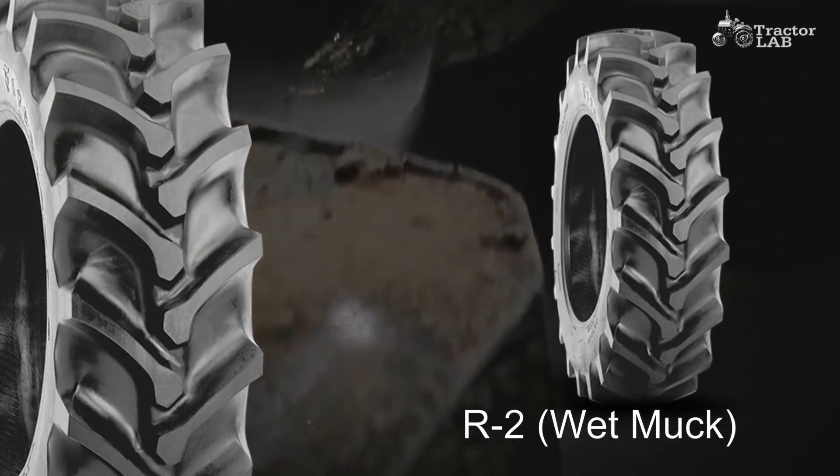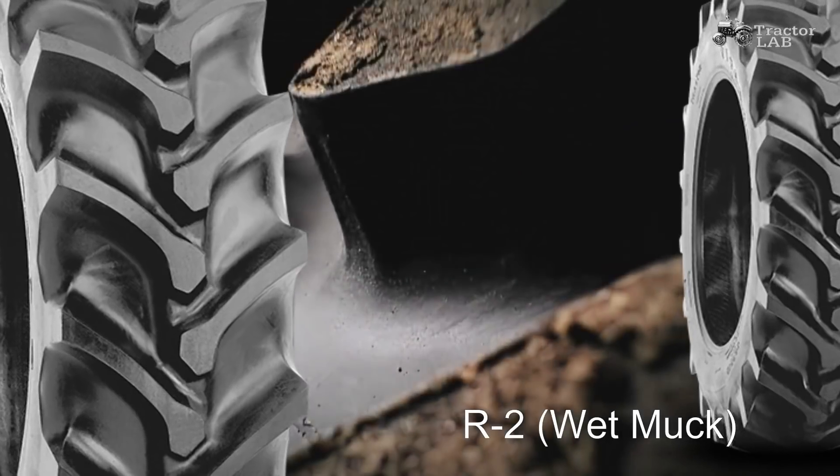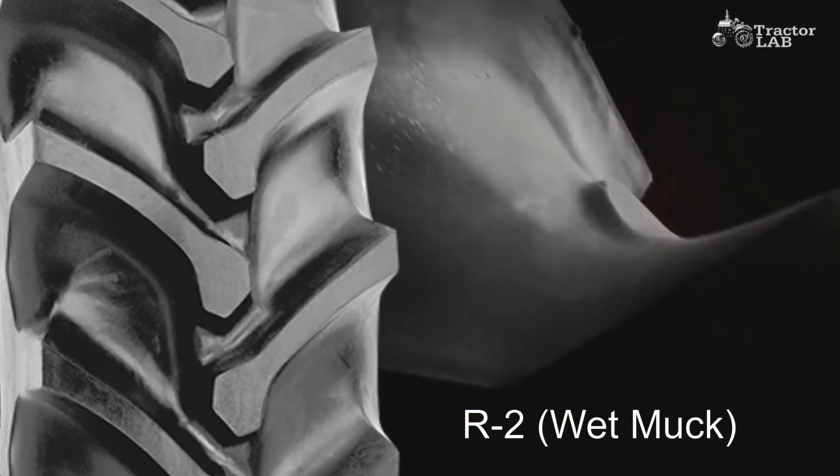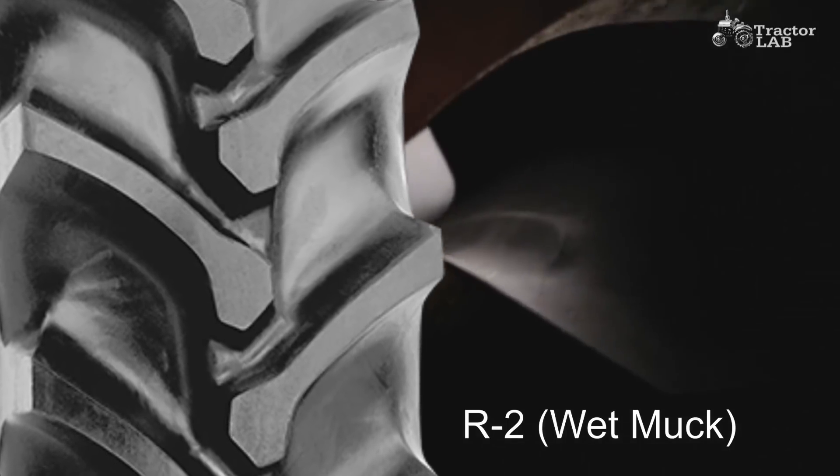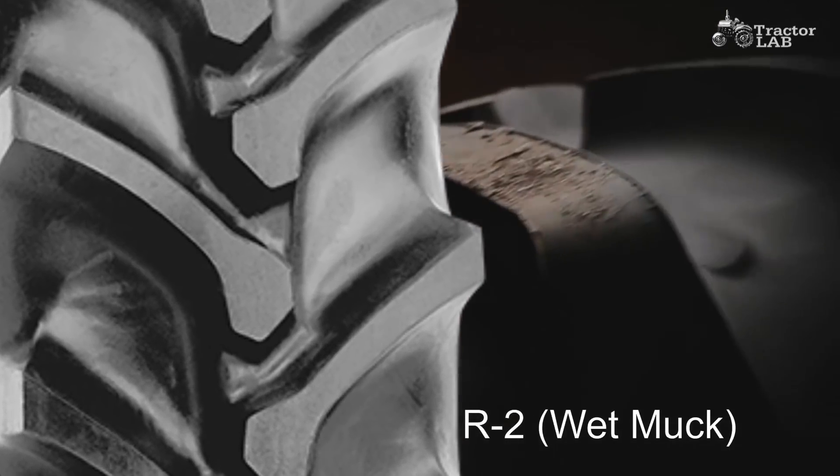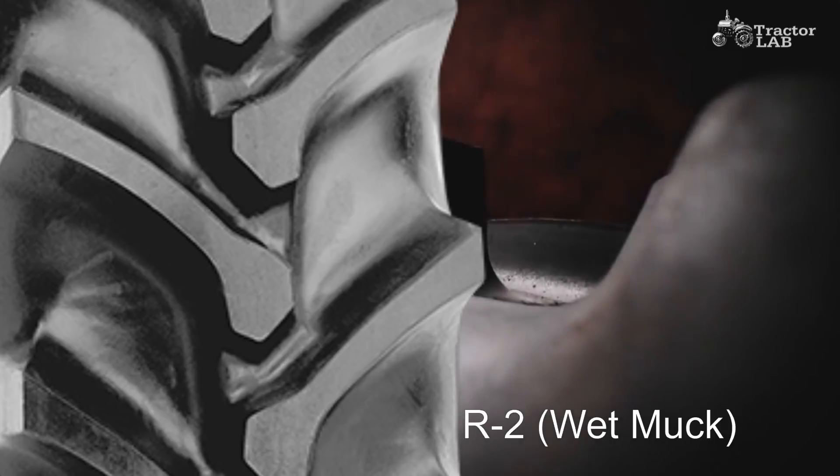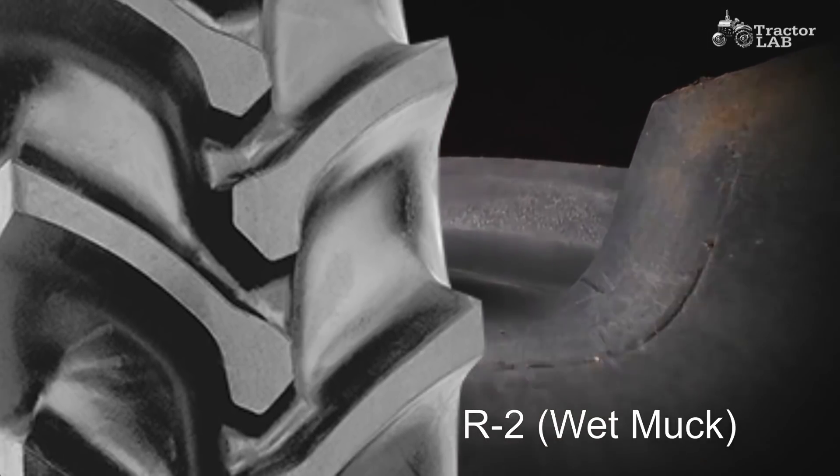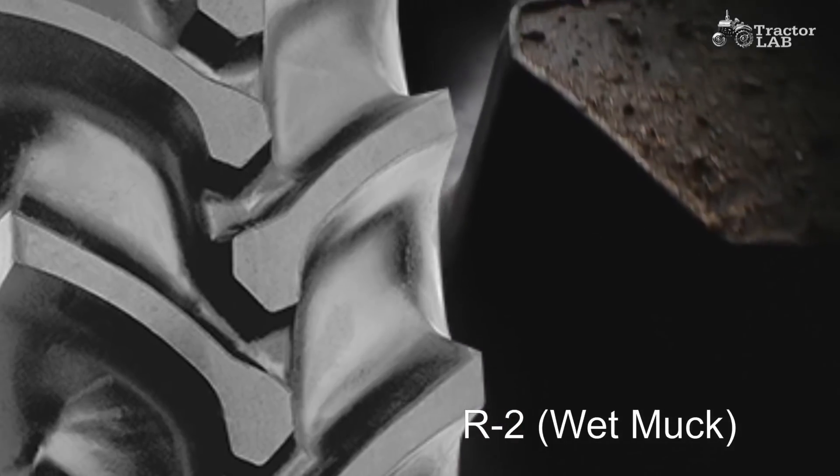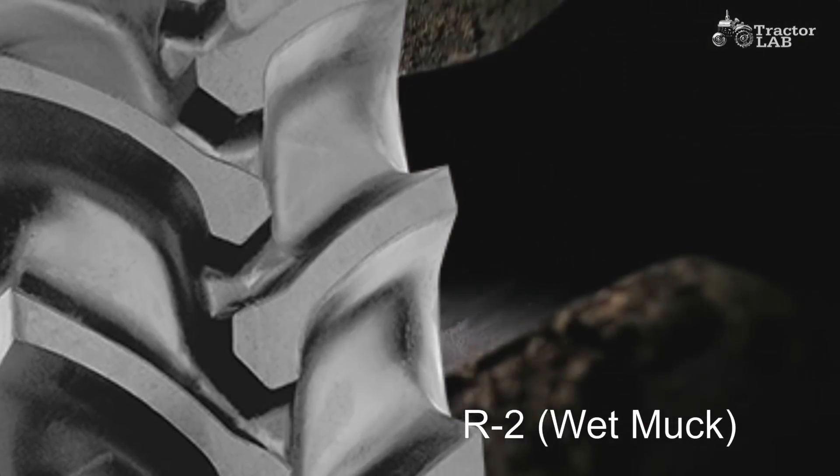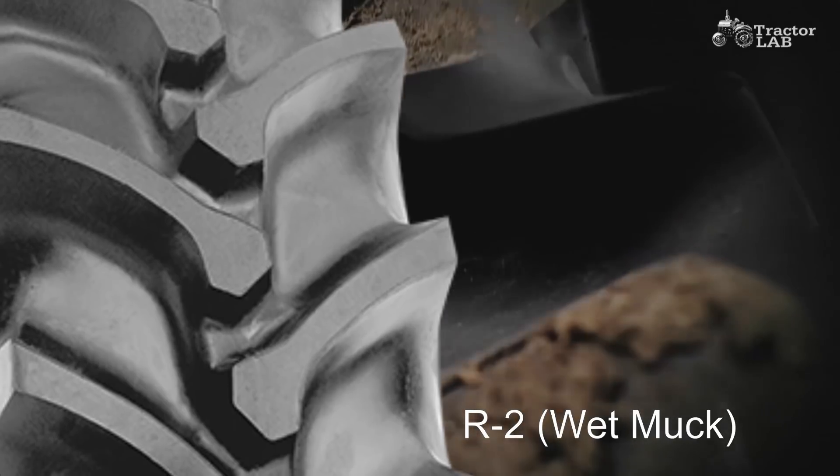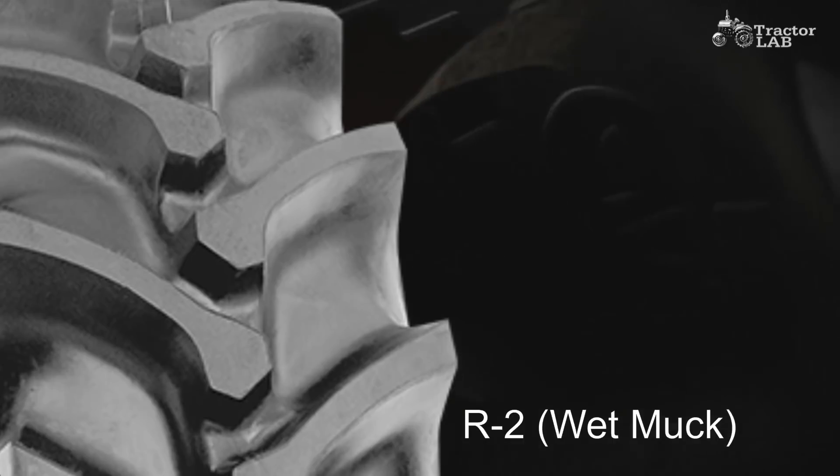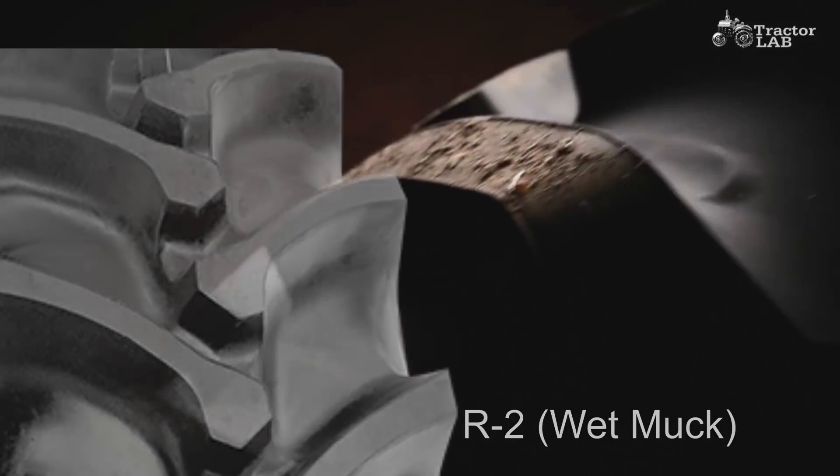R2 tires are for cane and rice and other crops grown in wet muck or flooded fields. R2 tires are about twice as deep as R1 tires. Although R2 tires are excellent in the service for which they are intended, the widely spaced lugs can cause problems with wear and vibration when roaded. R2 tires also do not pull as well as R1 tires in the drier soils typical of crops such as corn and beans.